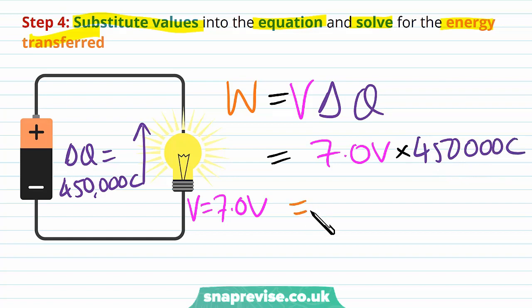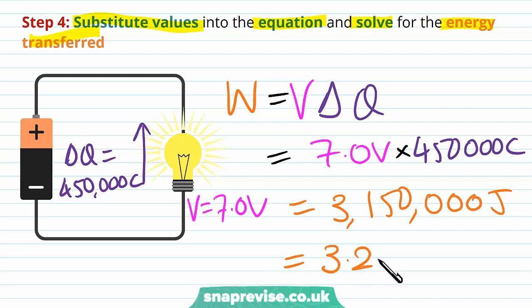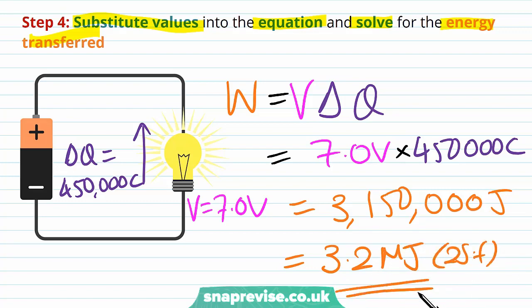This gives us a total energy transferred of 3,150,000 joules. We give our answer to two significant figures because that is the greatest number of significant figures that any quantity was given to us in the question. This gives us a total energy of 3.2 megajoules — we express it in megajoules because it's such a large amount of energy.